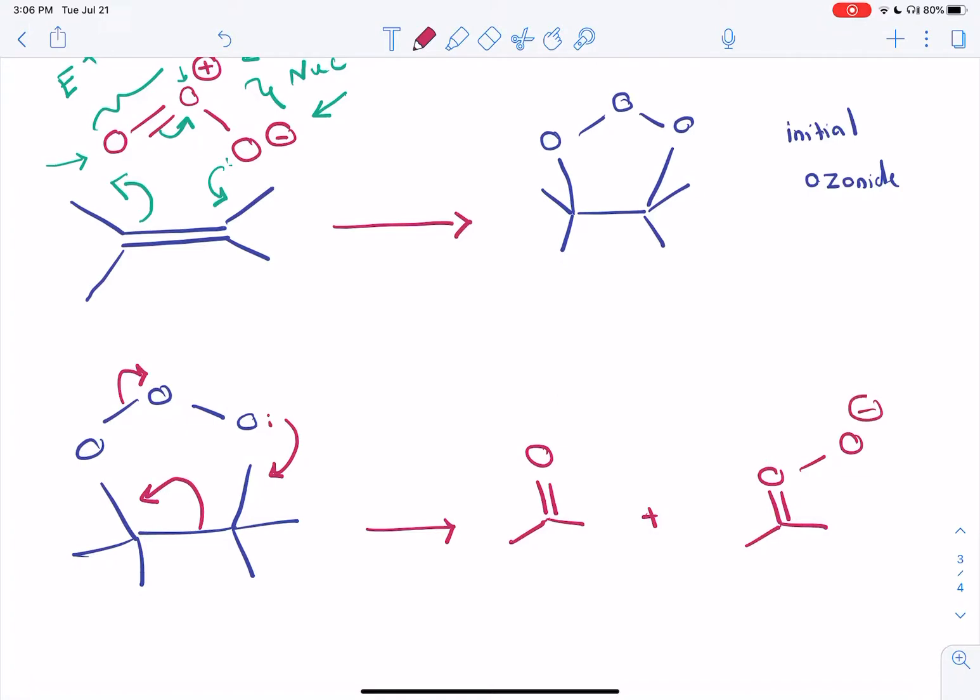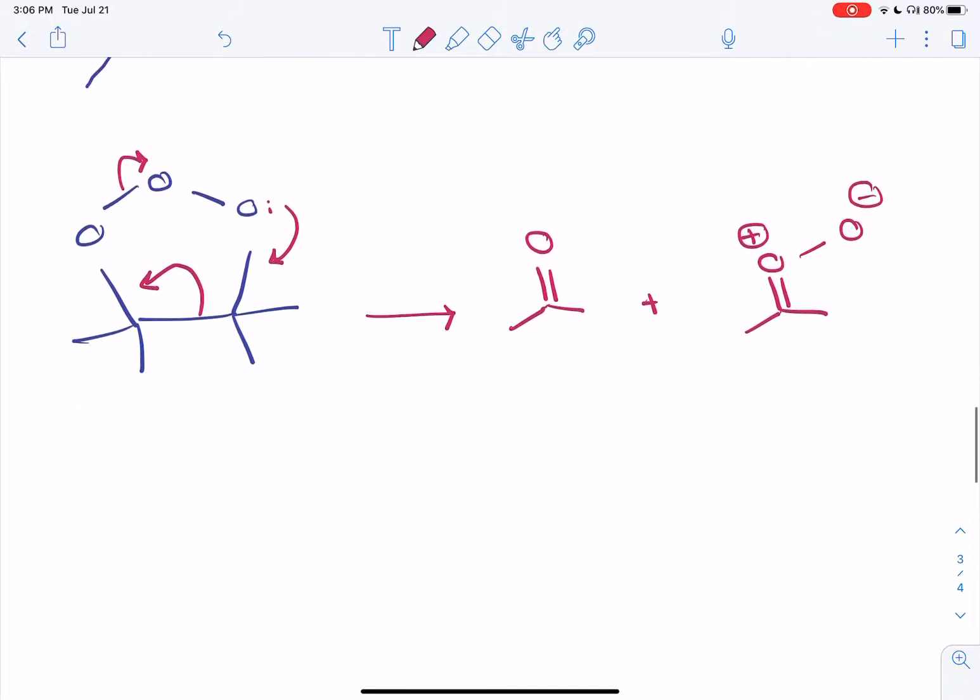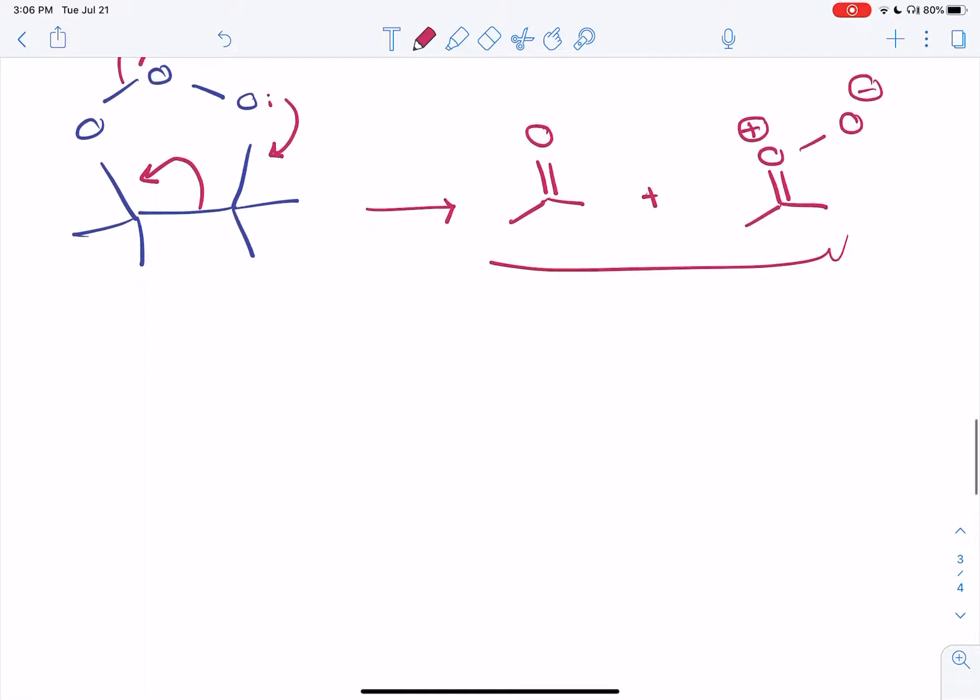Now the reason why these are more stable than the ozonide is because you have two carbon-oxygen double bonds. Now once you have formed these, they can also act as a dipolar dipolarophile to do a cycloaddition reaction.